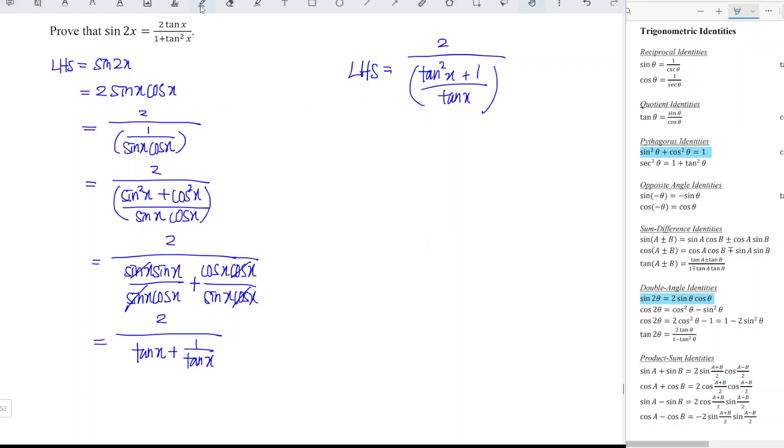And we can actually observe that this basically is A over B over C over D. And we know that A over B over C over D is equal to A times D over B times C. So which means that our left-hand side is equal to A times D, 2 tangent x over C. B is equal to 1, so B is equal to 1 for this case. So which means that 1 times anything, we get the same thing, 1 plus tangent squared x.